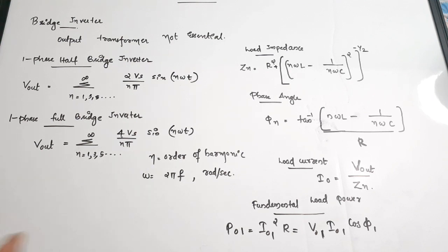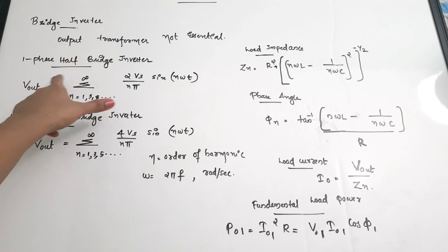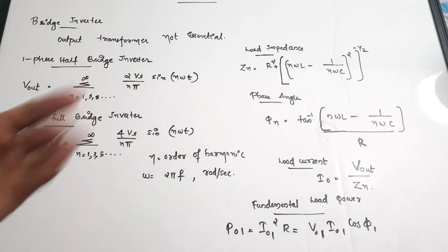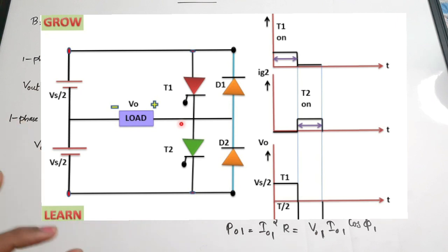The two basic types of bridge inverters are the single-phase half bridge inverter and the single-phase full bridge inverter. These are the two main classifications of bridge inverters. Now let us see the image of a single-phase half bridge inverter.